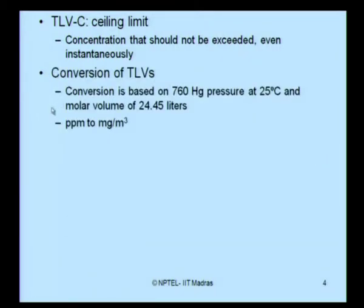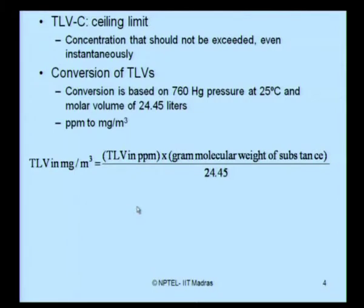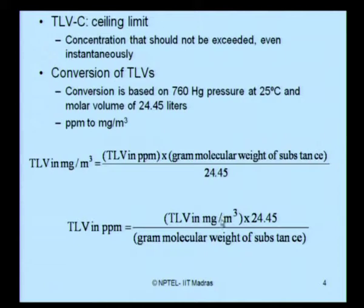TLV values can be converted to PPM (parts per million). The conversion is based on 760 mmHg pressure at 25°C and a molar volume of 24.45 liters. To obtain TLV in mg/m³, multiply the TLV in PPM by the gram molecular weight of the substance causing toxicity and divide by the molar volume of 24.45. Conversely, use the same equation in reverse to find TLV in PPM from mg/m³.